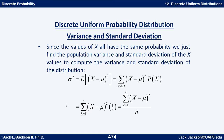The same thing is true for the variance. The variance is the expected value of (x minus mu) squared — that is (x minus mu) squared times the probability of x, which is just 1/n. Again it can be factored out front and we have the sum from k=1 to n of (x minus mu) squared over n, which is exactly the variance formula for a population.